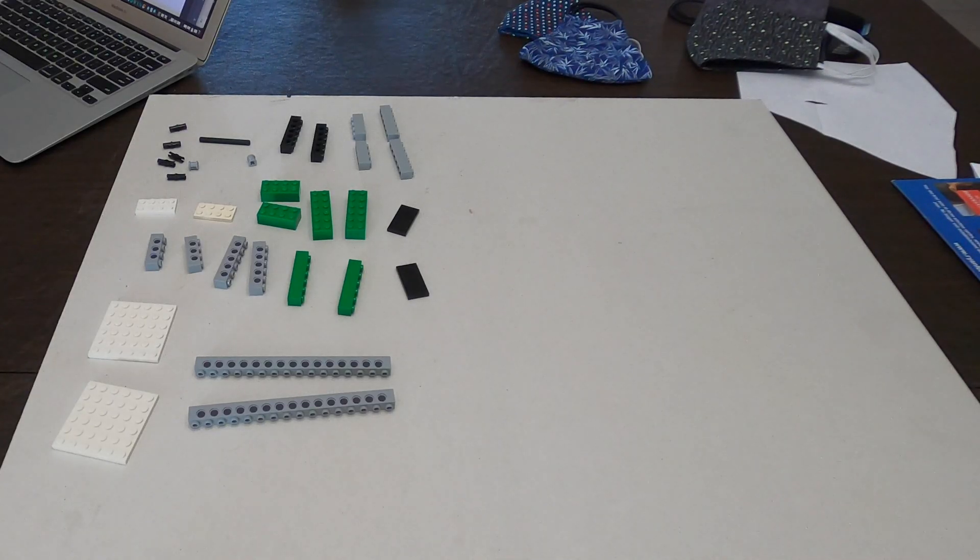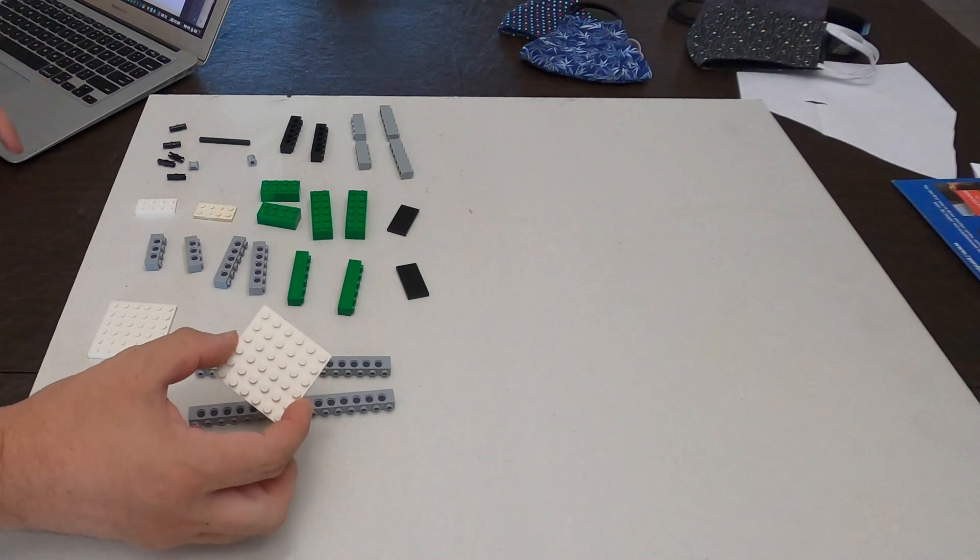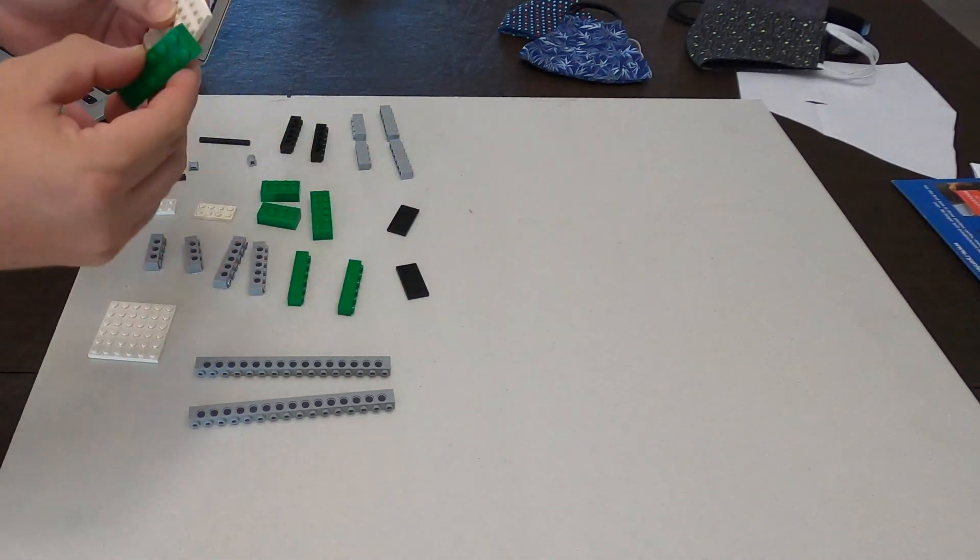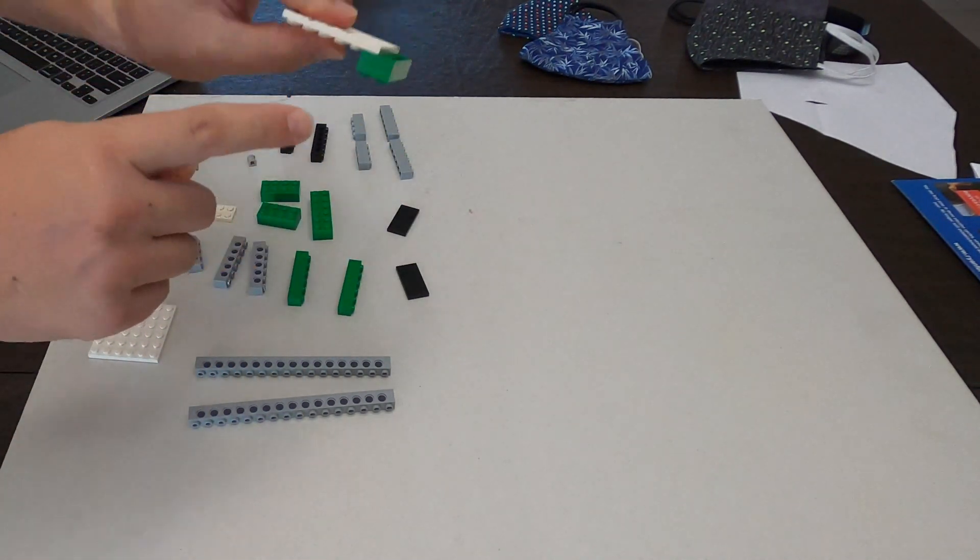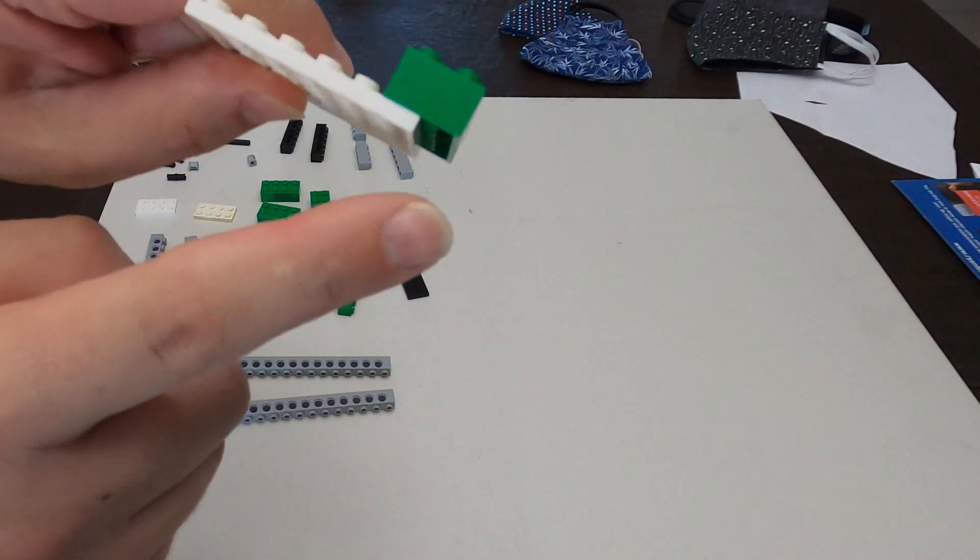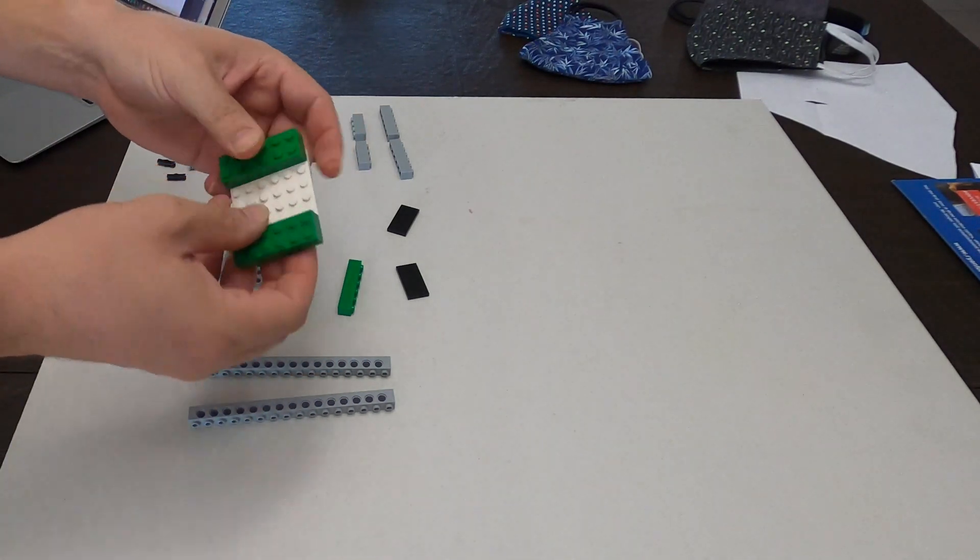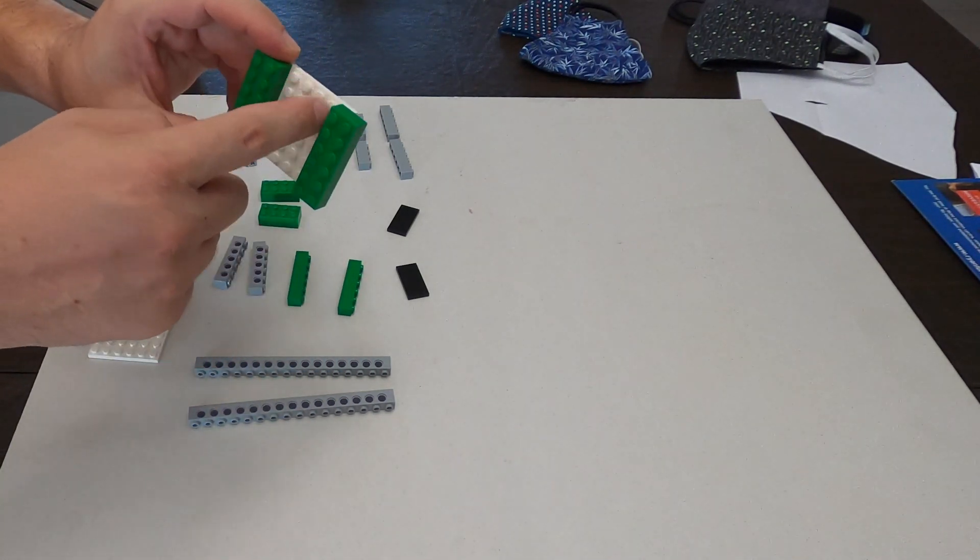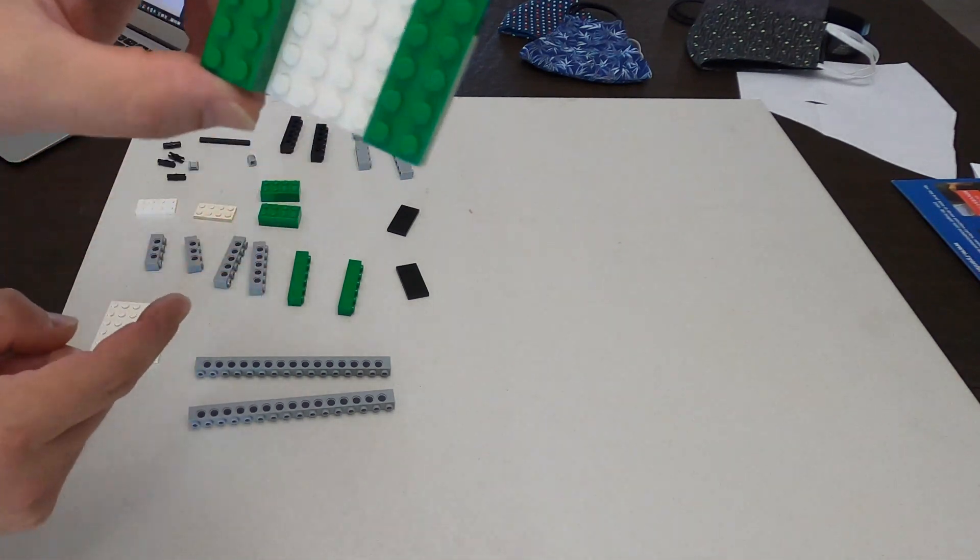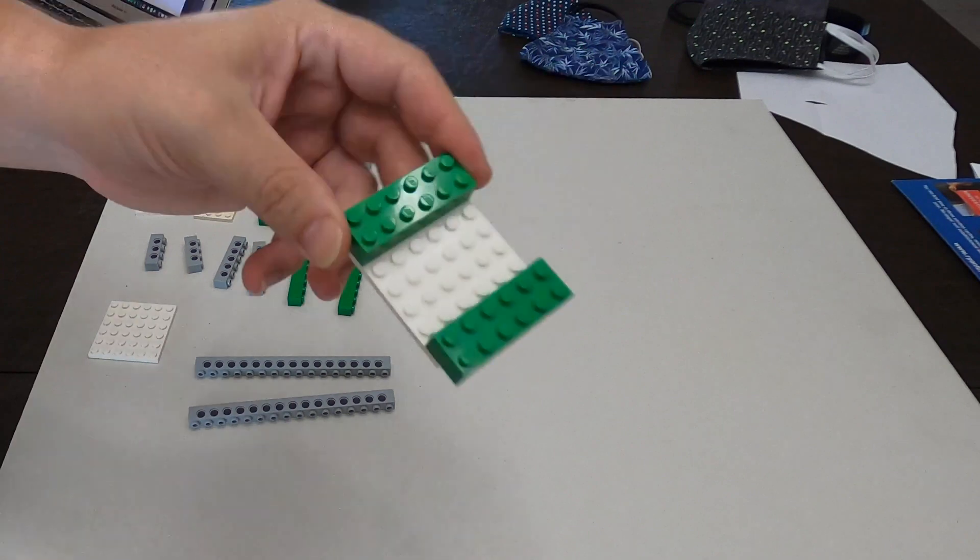So we're going to do the second version of the catapult. This one doesn't require rubber bands and is a little bit easier of a build. So we're going to start with our six by six plate. And here's one of the harder steps. We're going to put this on so it's hanging off the side. So see how there's an overhang. So it's hanging off the side. We're going to do that for both of them. So there should be four of the risers in between. So one, two, three, four.